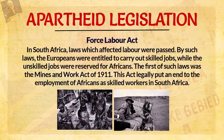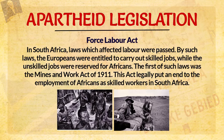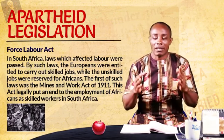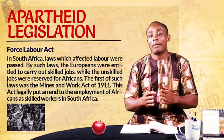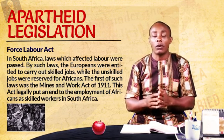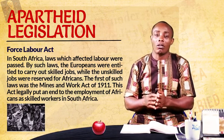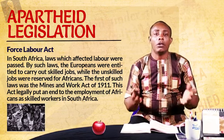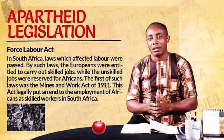The First Labour Act was also used to regulate labour relations in South Africa. By this act, Europeans were entitled to skilled labour while Africans were entitled to unskilled labour. An example of the First Labour Act was the Mines and Works Act of 1911. This act formally put an end to the employment of Africans as skilled labourers. Meaning that after 1911, unskilled jobs were reserved for Africans while the skilled jobs were meant for Europeans. Skilled work attracted higher pay while unskilled ones attracted low salary — this was done to preserve the superiority and dominance of the Europeans.